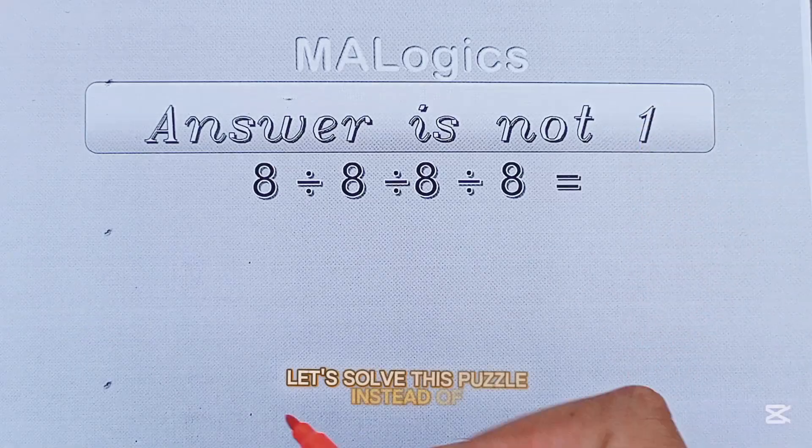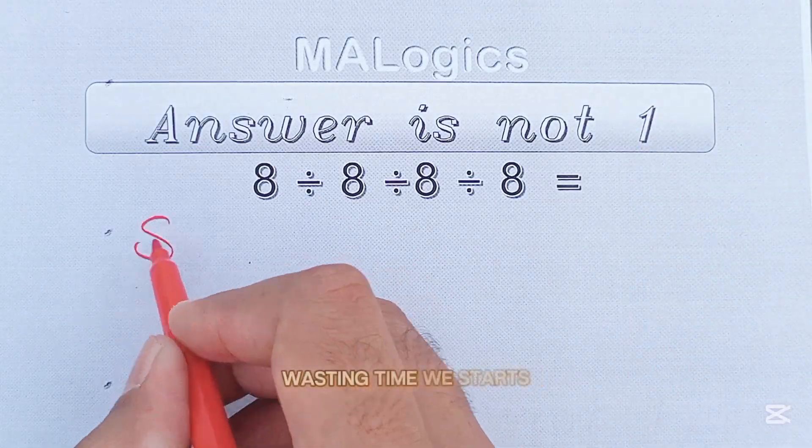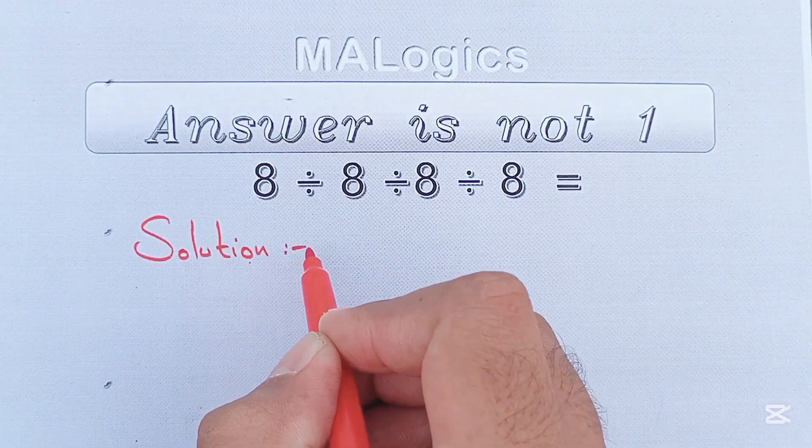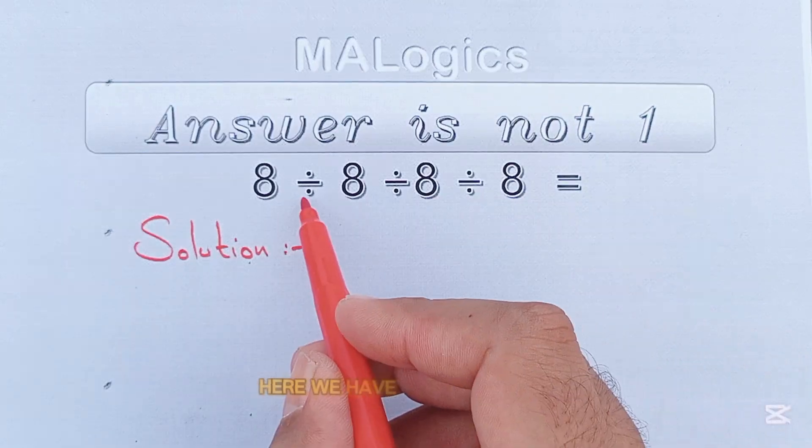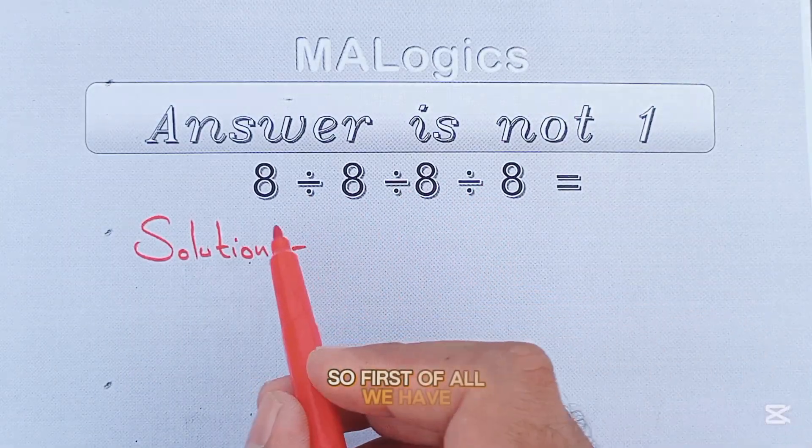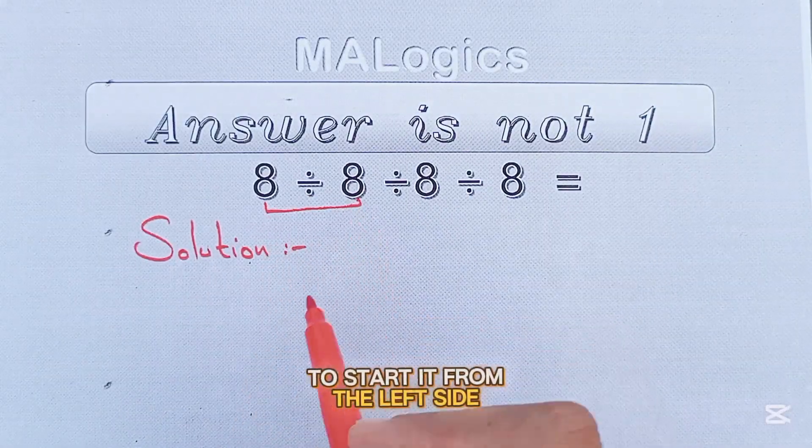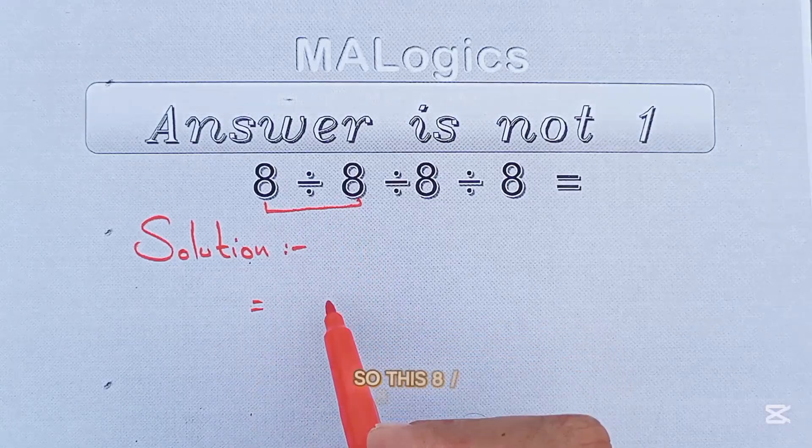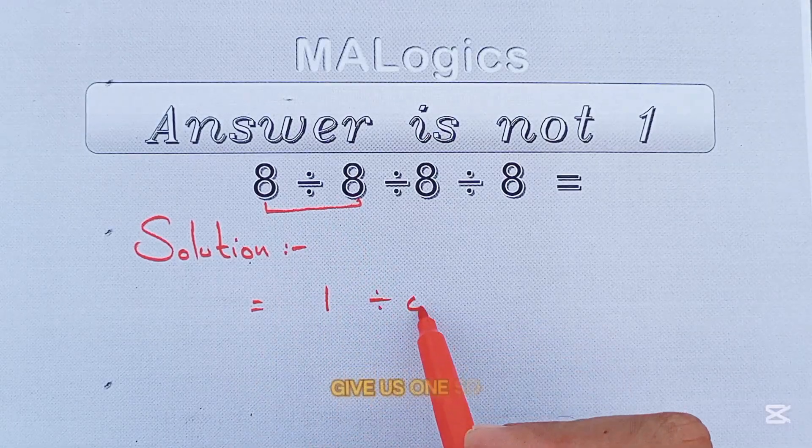Okay, let's solve this puzzle. Instead of wasting time, we start its solution. Here we have 3 divisions, so first of all we have to start it from the left side. So this 8 divided by 8 will give us 1.